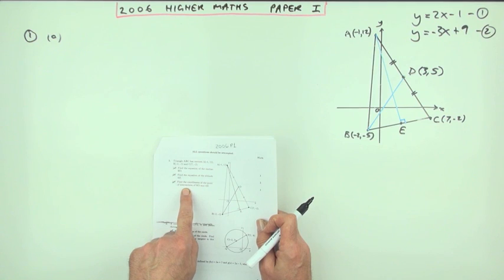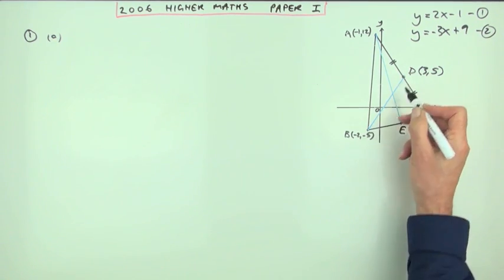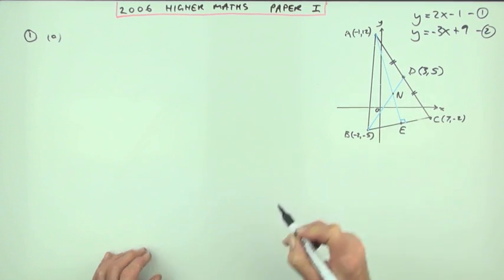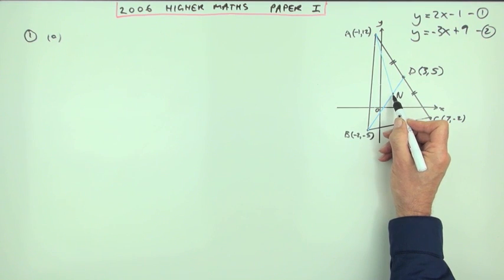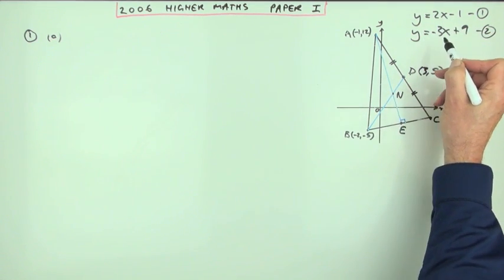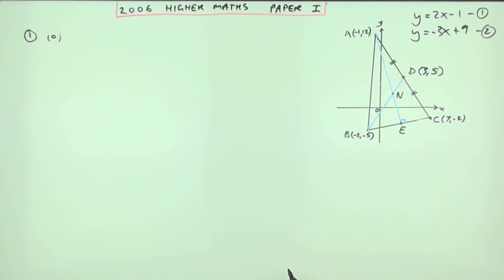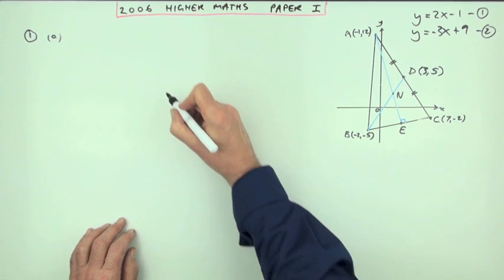Part C is to find the coordinates of the point of intersection. For the point of intersection, both equations must give the same result at that point, so this becomes simultaneous equations. The first mark of the three is awarded simply for indicating you're going to use simultaneous equations.